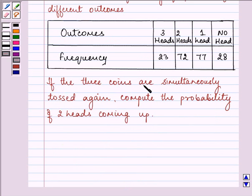If the 3 coins are simultaneously tossed again, compute the probability of 2 heads coming up.